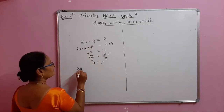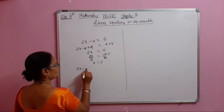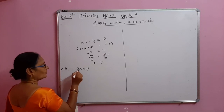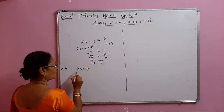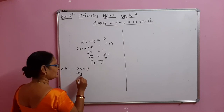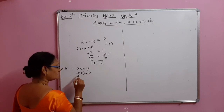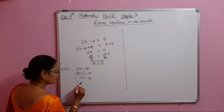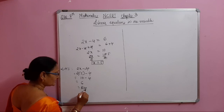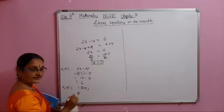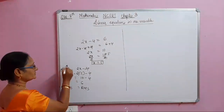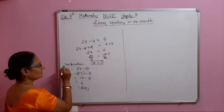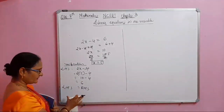You can verify this. The equation is 2x minus 4. Substitute x equal to 5: 2 times 5 minus 4 equals 10 minus 4 equals 6. That equals the RHS. So LHS equals RHS — this is verification. After getting the value, you verify by substituting back.